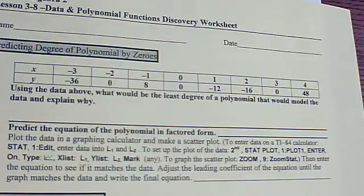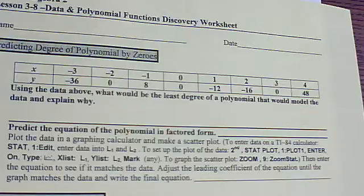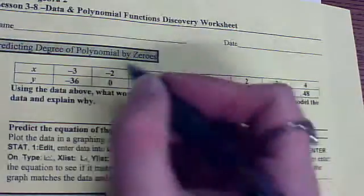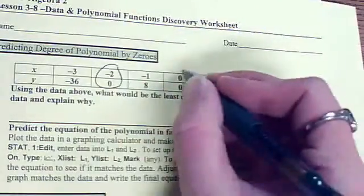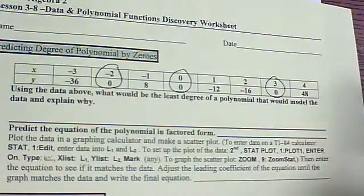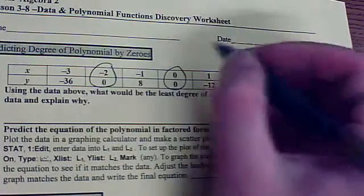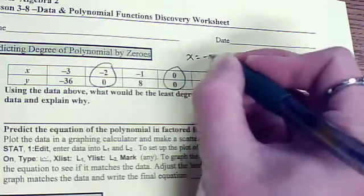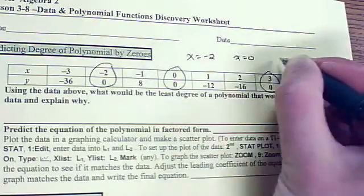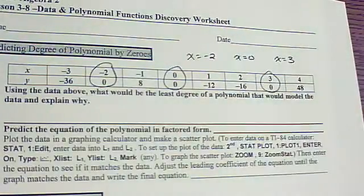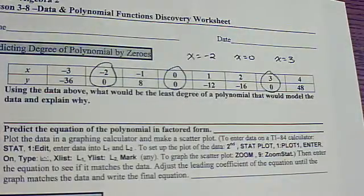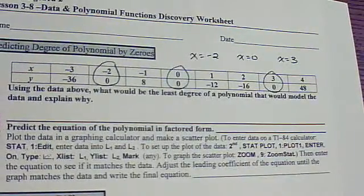A good place to look is our zeros. Zeros are your x-intercepts — zeros are when your y-value is zero. So let's look through the table and find when the y-value is zero. We have roots at x equals negative 2, x equals zero, and x equals 3. Those are also my x-intercepts, but we know we have at least three roots.